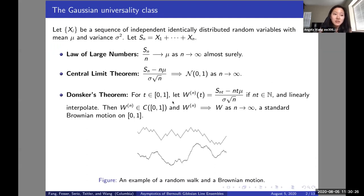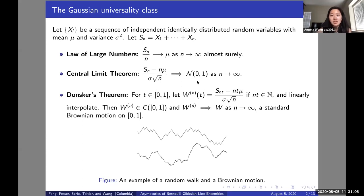First let's talk about a universality class. A universality class identifies the behavior of systems as they approach a limit. Here are some well-known results for the Gaussian universality class. Suppose X_i's are a sequence of independently identically distributed random variables with a mean and a variance, and let S_n be the sum of these variables. The law of large numbers says that S_n over n will converge almost surely to the mean. The central limit theorem says that if you rescale S_n by the mean and the variance, they will converge in distribution to the standard Gaussian distribution.